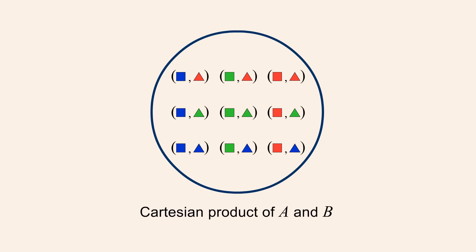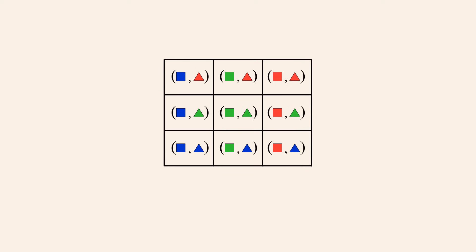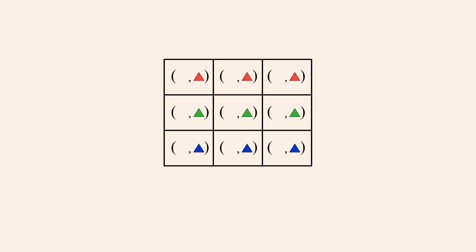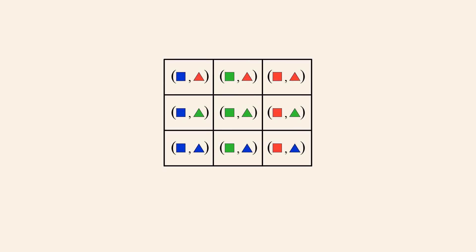The Cartesian product is denoted using a symbol which looks like a multiplication symbol. We can display the ordered pairs of this Cartesian product in a two-dimensional grid where all the first elements are the same within any particular column, and all the second elements are the same within any particular row. A horizontal position in the grid can be chosen by specifying the color of square, and the vertical position by the color of triangle. So by specifying the colors of square and triangle, we can locate any position within this two-dimensional grid.